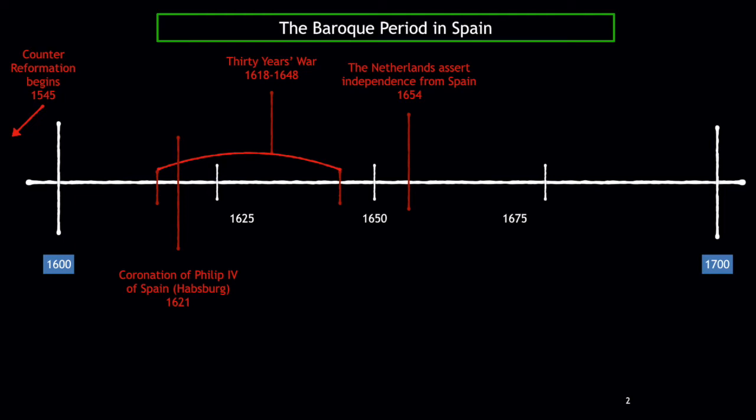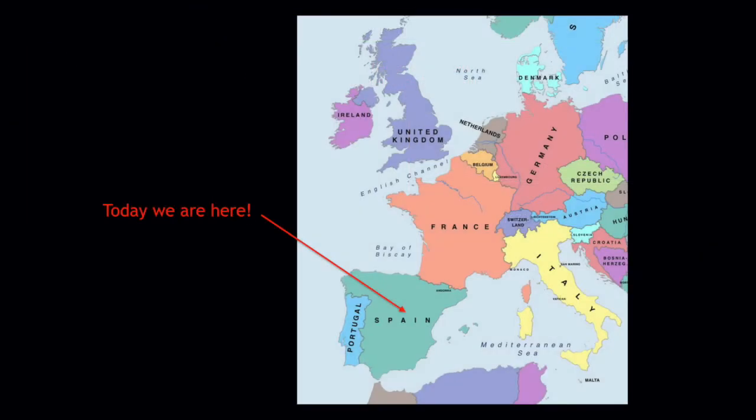Spain was weakening as an empire. Naples and Italy were part of Spain and in a constant state of unrest. The Netherlands were fighting against the Spanish and eventually gained independence in 1648. Despite the suffering in agriculture, industry, and trade, writers and artists produced great works during this time. And today we are in Spain — we've finally moved to another country.